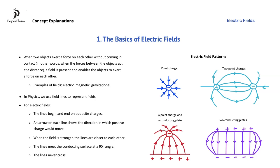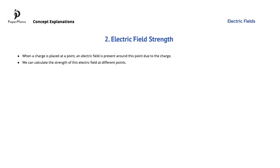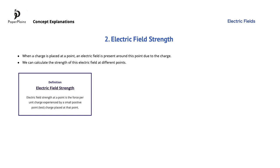Next, let's discuss electric field strength. Earlier we saw that when a charge is placed at a point, there is an electric field present around this point due to the charge. The strength of this electric field will be different at different points in the field. So, for example, the electric field strength will be greater when we are closer to the charge, and smaller when we are farther away. Also, logically, when the magnitude of the charge is larger, the strength of the field due to the charge will also be larger. We can use an equation to calculate the strength of this electric field at different points. Electric field strength at a point is the force per unit charge experienced by a small positive point, or test charge, placed at that point.